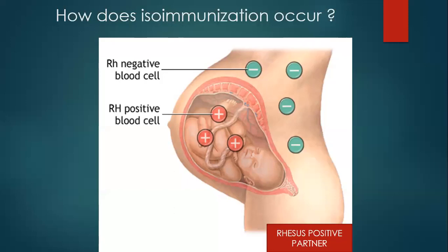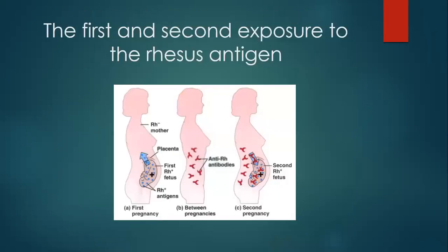The first pregnancy for this woman usually goes without any problems because by the time IgG is being produced it's six months later. The seeping of blood usually happens in the third trimester, so by the time IgG — which can cross the placenta — is being produced, the baby has already been born. That is why the first baby always goes without problems.